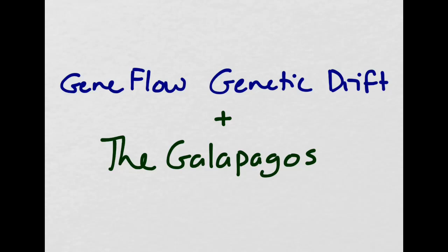Greetings Bio 400 people. Today we're going to talk about gene flow and genetic drift in the context of the Galapagos. This is going to be familiar territory for a few of you who have researched the Galapagos, but we're going to look at it under the context of evolution today.